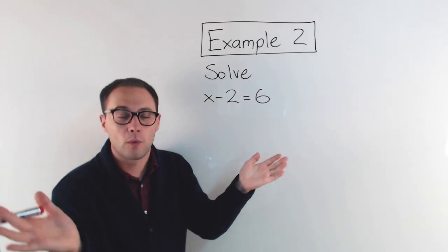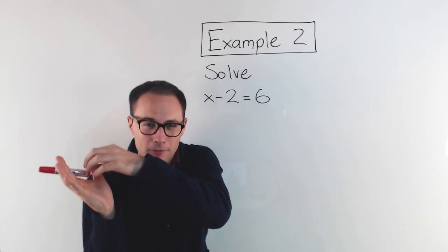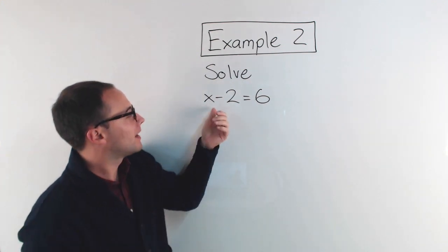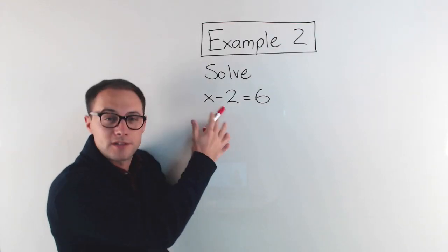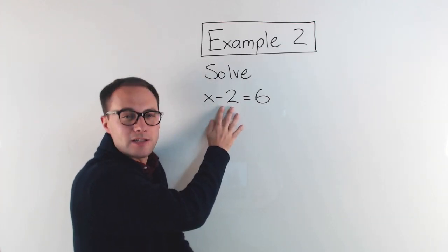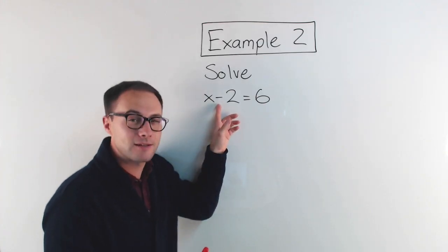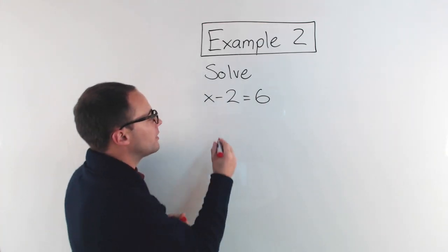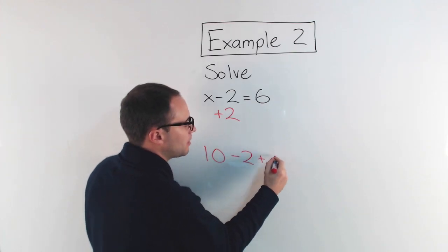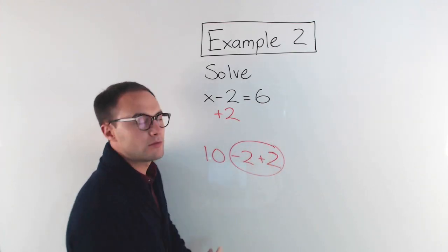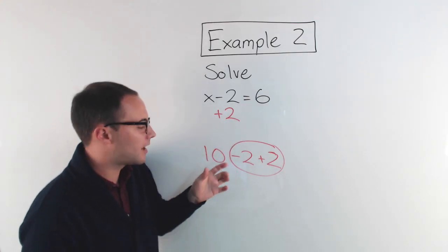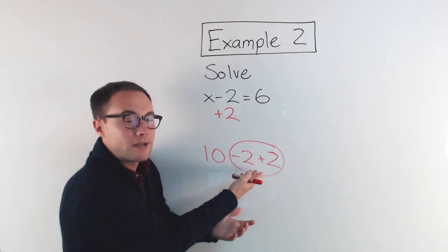The goal — think of the scale problem — is to get the variable alone on one side equal to something on the other side. Right now x is being subtracted by 2. To undo that subtraction, I use the inverse operation. The opposite of subtraction is addition. So if I add 2, that minus 2 will go away. Think of it this way: minus 2 plus 2 are opposites — inverse operations — they cancel each other out, and I'm just left with x.